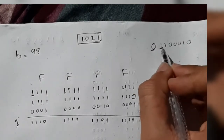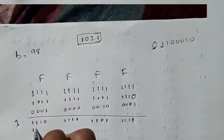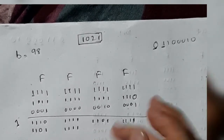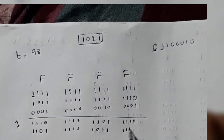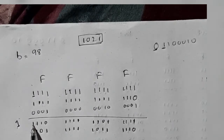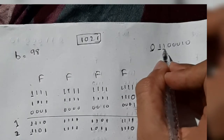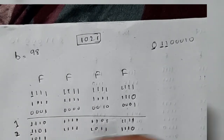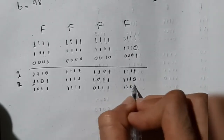Moving to the second bit: we compare and it is the same. When the bits are the same, we only perform left shift — no XOR is done. We left shift to get the next value. We write '2' to mark the second iteration. For the third bit, it is also the same, so again we only left shift and write '3' for the third iteration.